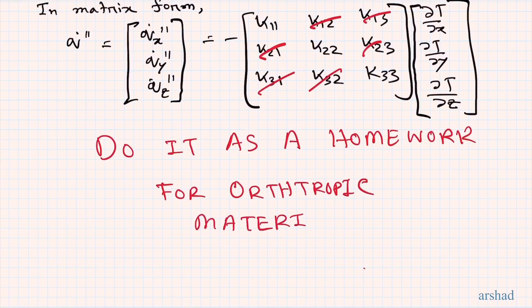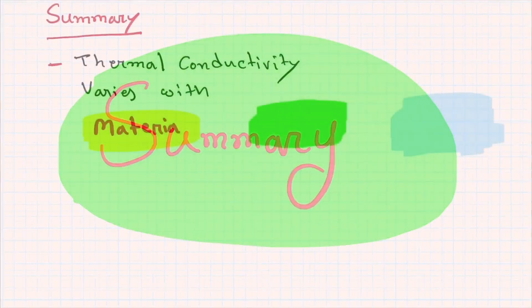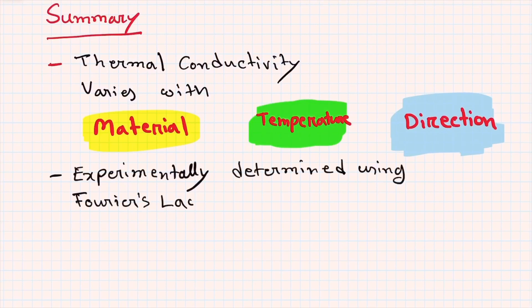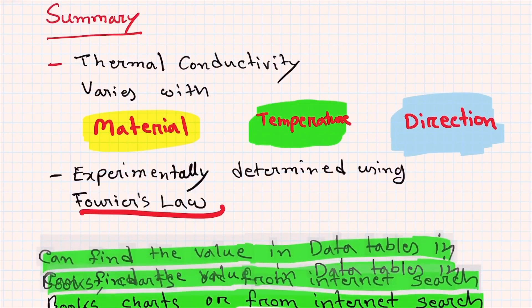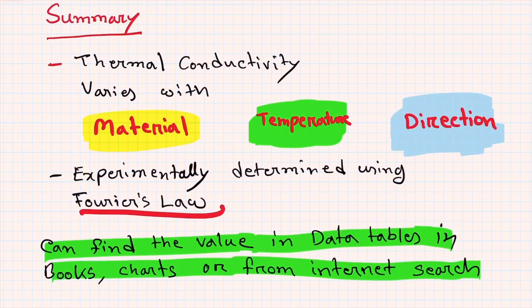To summarize: thermal conductivity varies with three important things — material, temperature, and direction. We measure it experimentally using Fourier's law. Thermal conductivity values can be found in data tables, books, charts, or from internet searches.